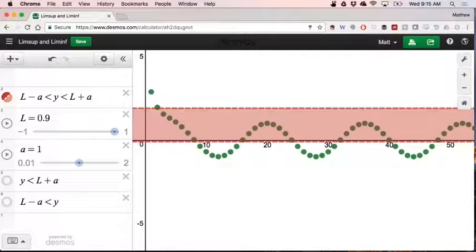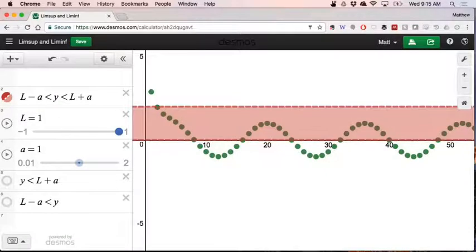But last time we also talked about the concept of a limit superior, the lim sup of a sequence. And at the time I kind of introduced it by saying, well, one of the things we did on Monday was we argued for the existence of a subsequence of this sequence which was convergent and whose limit was equal to 1.